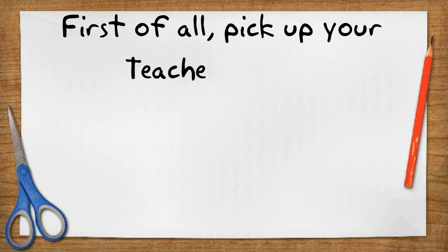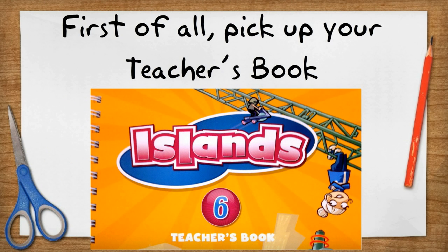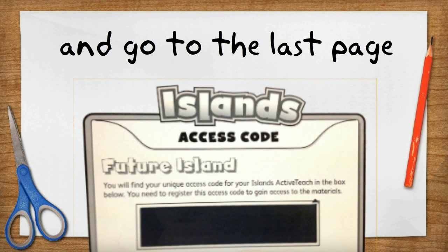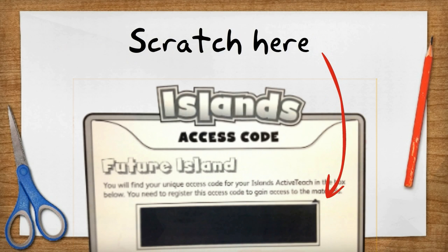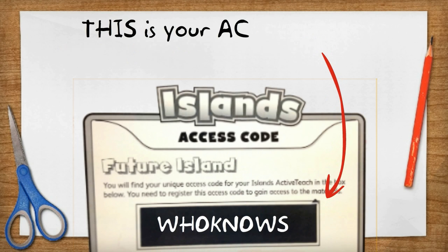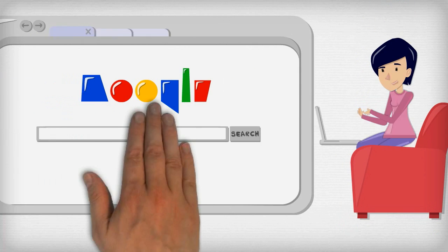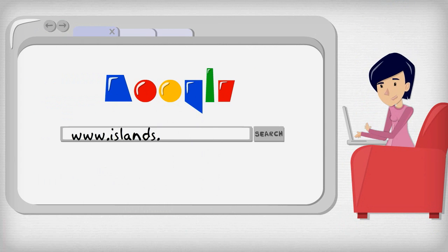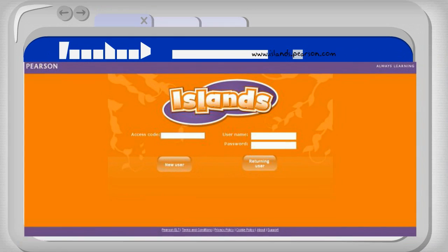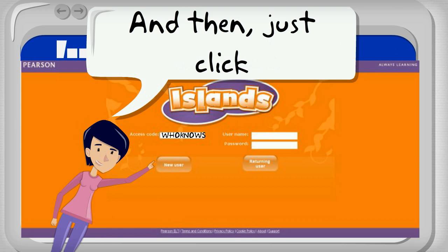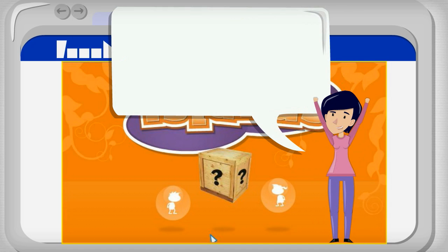First of all, pick up your teacher's book and go to the last page. Scratch here. This is your access code to the online world. Write down your access code, and then just click. Great, you're in.